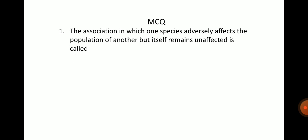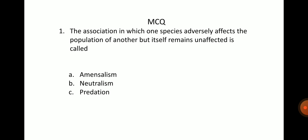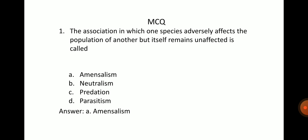The first question: the association in which one species adversely affects the population of another but itself remains unaffected is called? Options: A. Amensalism, B. Neutralism, C. Predation, D. Parasitism. The answer is option A, Amensalism.